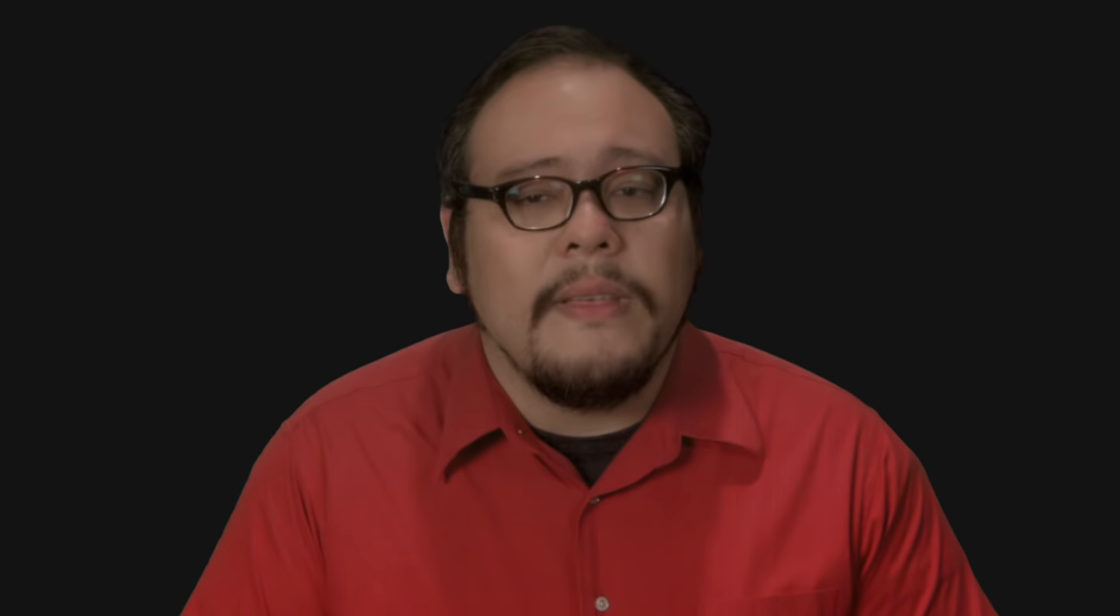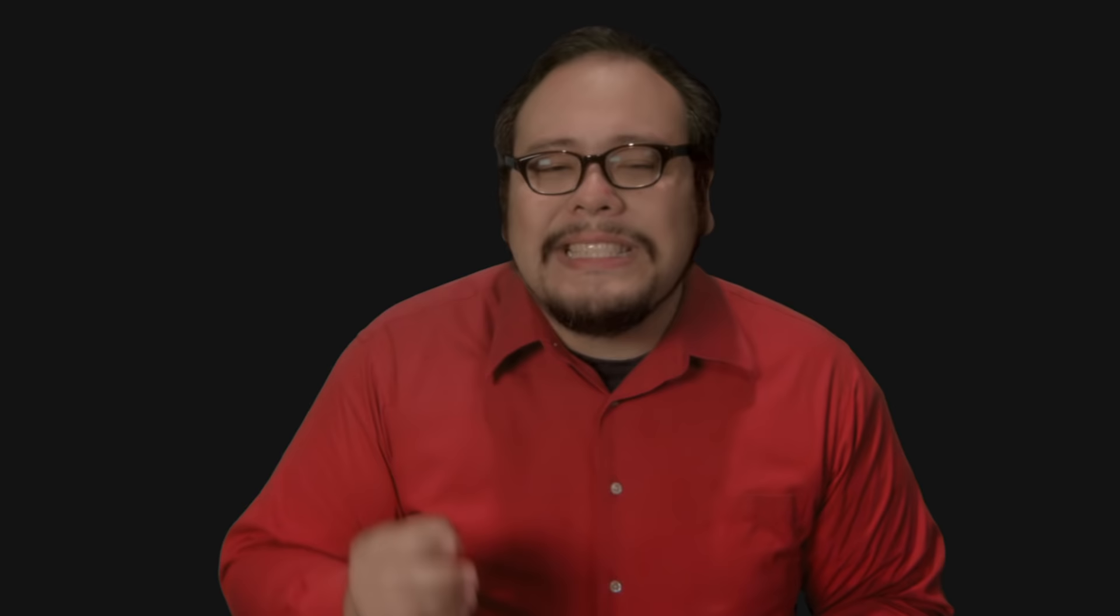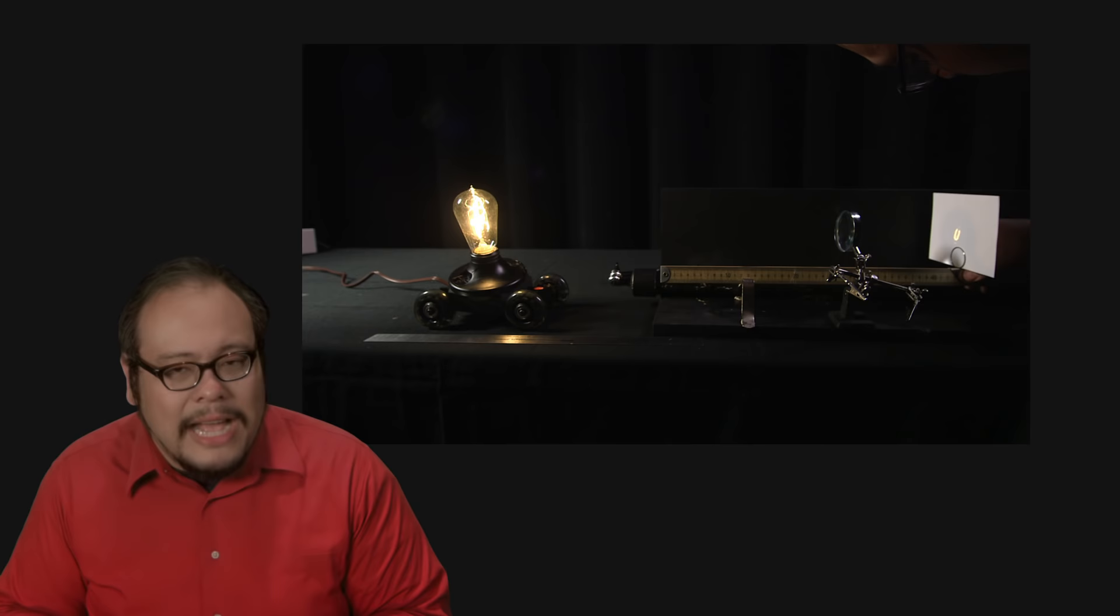Now before we get really deep, let's talk about a key controller of depth of field: the aperture. A lot has been written and said about depth of field using graphics and charts, and that's fine, but I really wanted to see the physics of this happening in front of my own eyes. I set up a simple optics experiment using a single element lens, a magnifying glass with a focal length of 130mm.